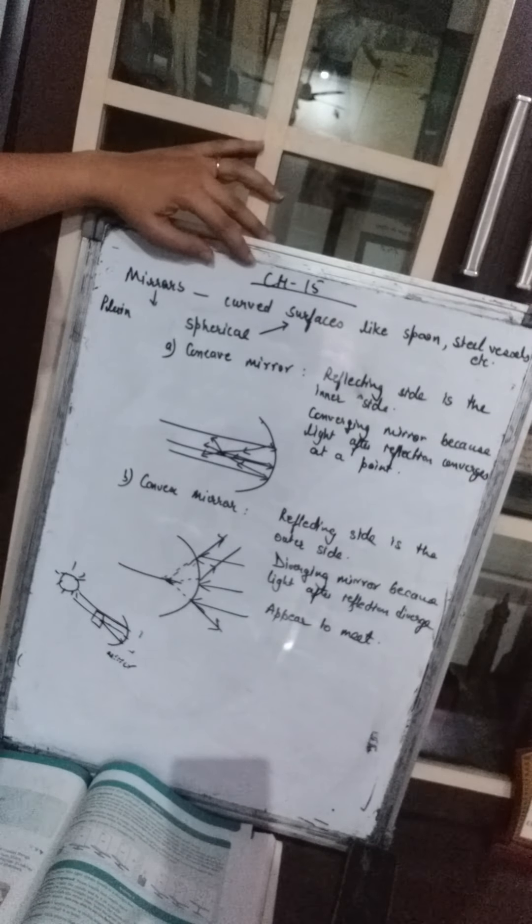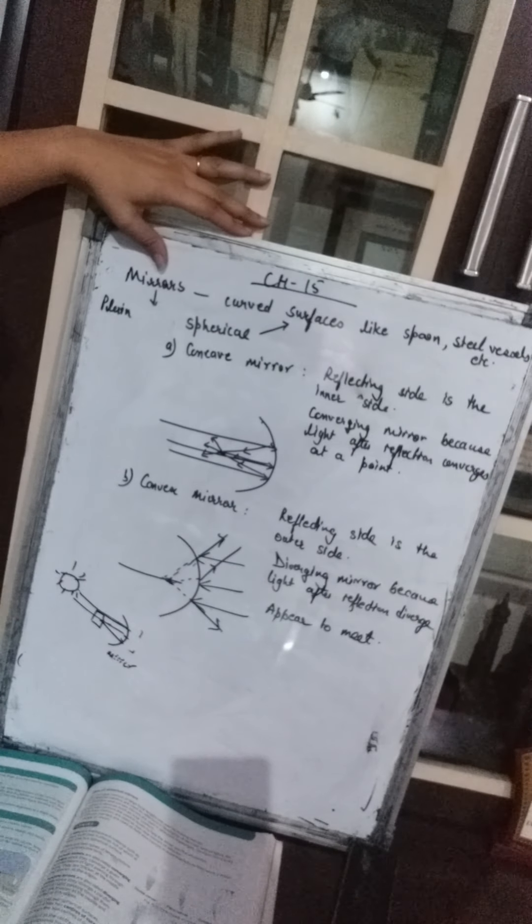Good morning girls. We are in continuation of chapter number 15, Light, and today we will study about the different kinds of spherical mirrors. Mirrors can be plain mirrors as well as spherical mirrors. Spherical means which have a curved surface — like spoons and steel vessels, they have curved surfaces and also show reflection. We will study in detail about the two kinds of spherical mirrors.